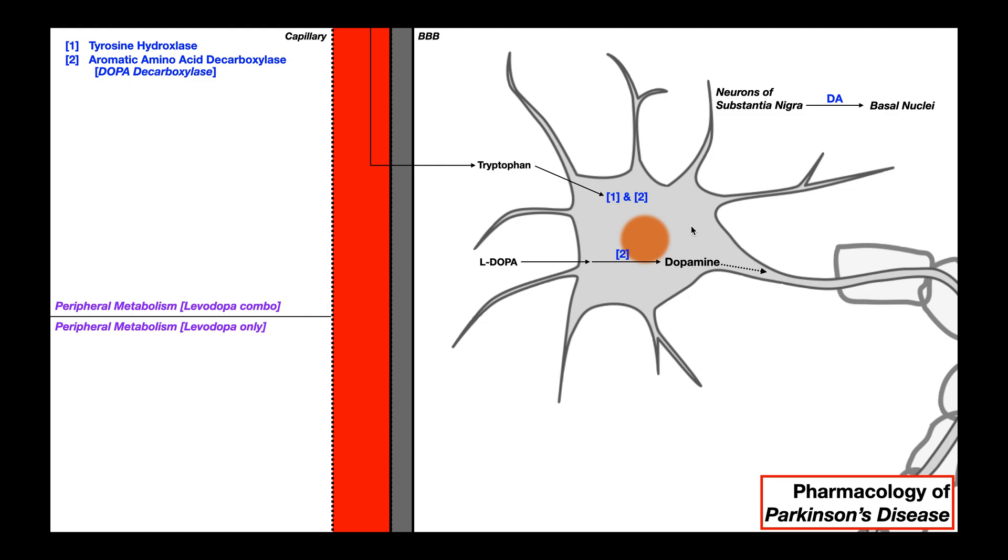Without these neurons of the substantia nigra, there's less dopamine. Now in general, these cells have a normal way that they would synthesize dopamine, assuming they're healthy. Right here, we have a capillary in red, and in gray, this is our blood-brain barrier. The blood-brain barrier prevents most things from crossing from the blood into the brain. But it does allow large molecules that are lipid soluble or hydrophobic, or specific molecules that the brain needs, like the amino acid tryptophan.